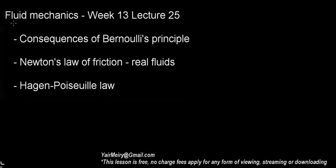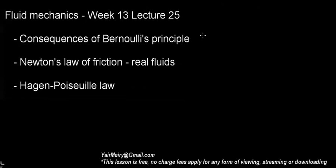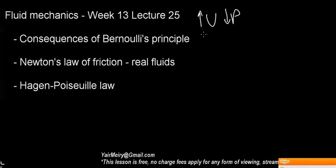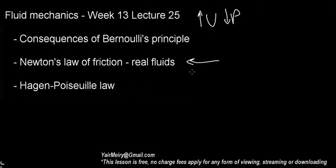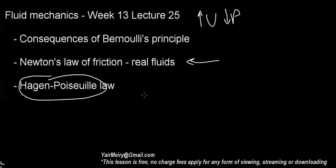Welcome to the third video in the series on fluid mechanics. We finished off with Bernoulli's Principle last time. Just to revise, Bernoulli's Principle states that velocity goes up, pressure goes down — but Bernoulli's Principle really deals with ideal fluid. We know that a fluid is not really ideal, so something else is going on. We're going to describe what that is, and finish with the Hagen-Poiseuille law, which describes the closest thing to what we understand about blood flow.